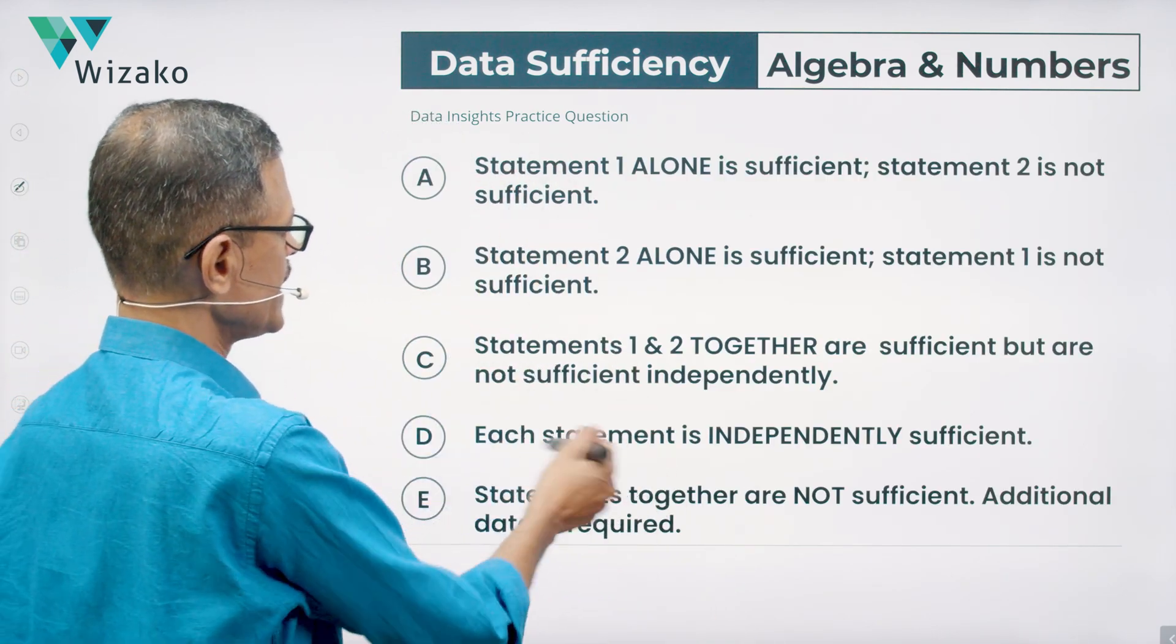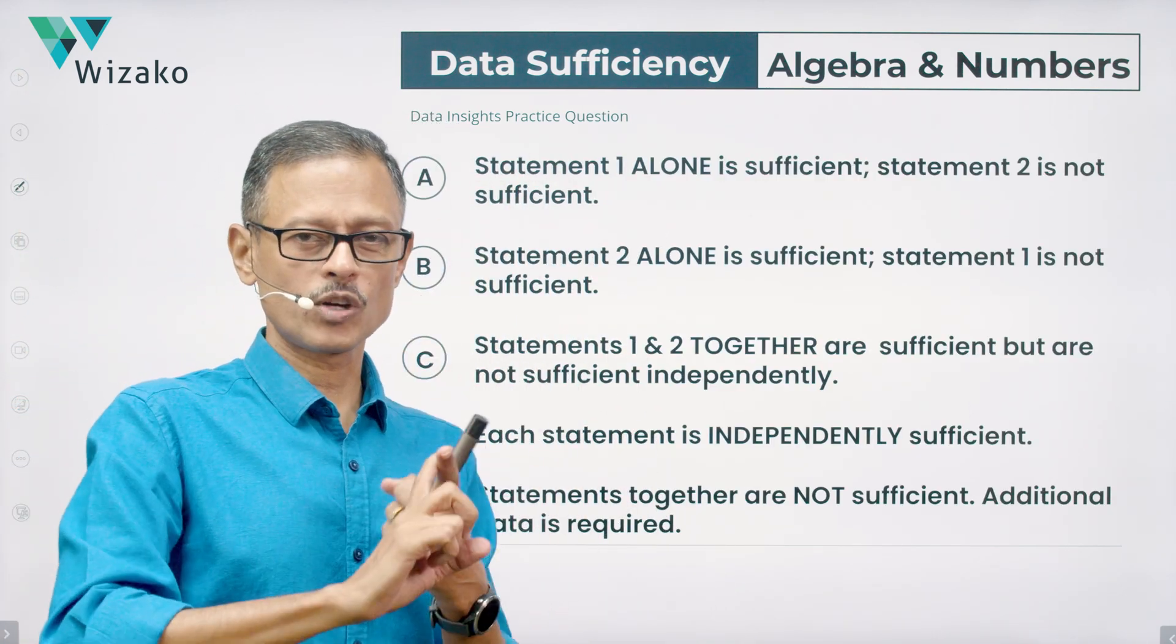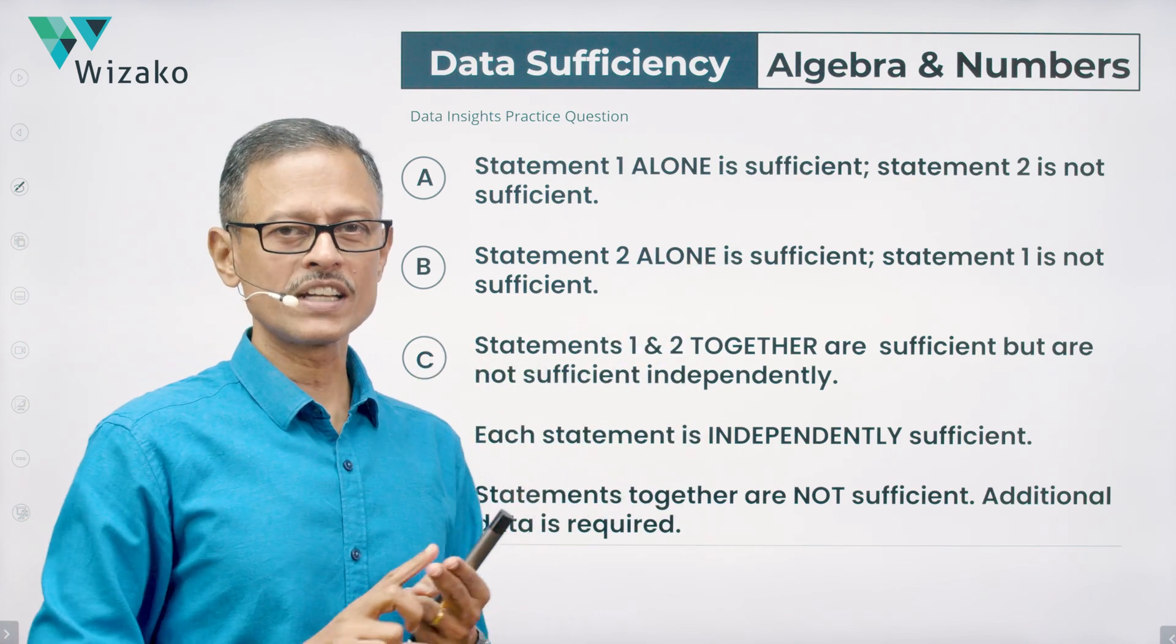These are the five answer options to any DS question. Statement one alone is sufficient, two is not, answer option is A. Two alone is sufficient, one is not, answer option is B.